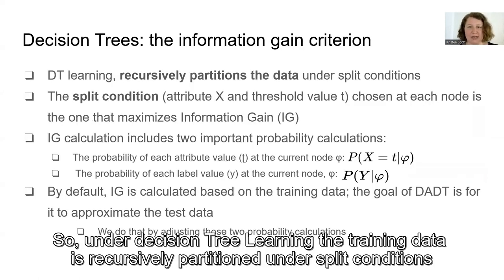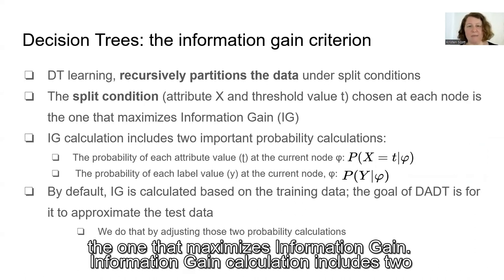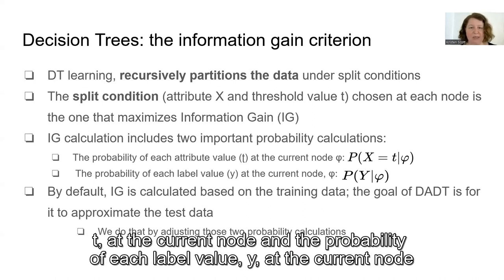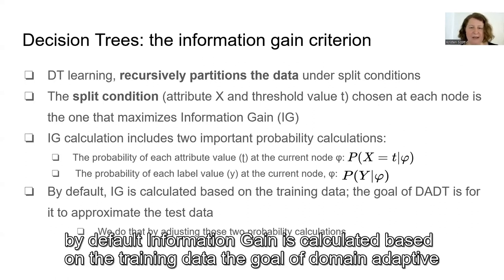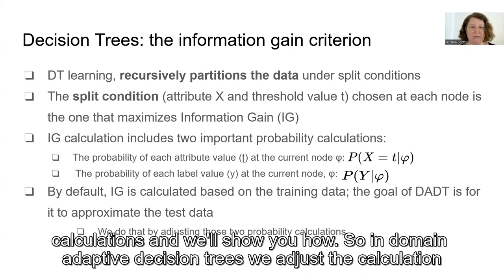Under decision tree learning, the training data is recursively partitioned under split conditions. The split condition — attribute X at threshold value T chosen at each node — is the one that maximizes information gain. Information gain calculation includes two important probability calculations: the probability of each attribute value T at the current node, and the probability of each label value Y at the current node. By default, information gain is calculated based on the training data.